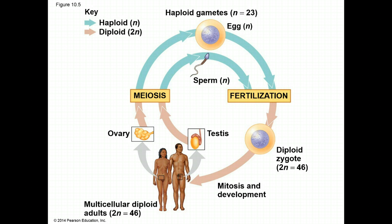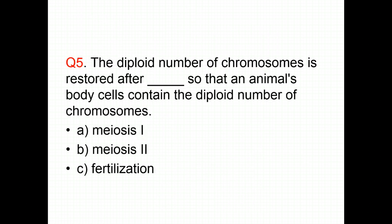So for humans, the haploid egg and sperm come together at fertilization to restore the diploid. Let us review. Question 5: The diploid number of chromosomes is restored after blank, so that an animal's body cells contain the diploid number of chromosomes. Choose the correct answer.